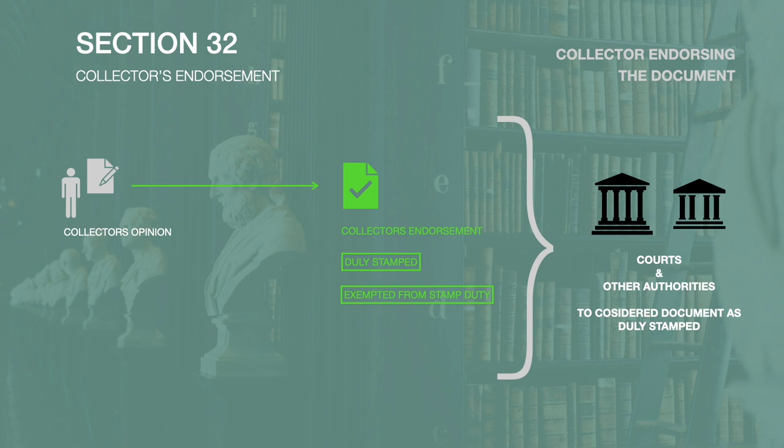Furthermore, if a document is exempted from duty for whatsoever reason, then the collector under section 32, subsection 2 shall endorse the document mentioning the same. Section 32, subsection 3 gives the endorsement of the collector meaning and power. This endorsement is sufficient evidence that the document is duly stamped, and once such endorsement is received, it is to be treated as duly stamped.